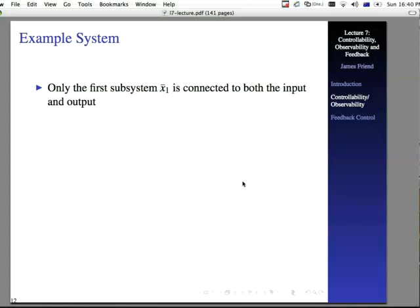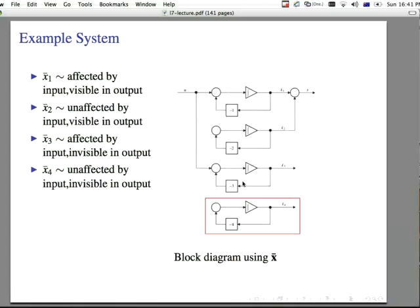Only the first system, x1 bar, is connected to both the input and output. It's the only contribution for the transfer function, which we noticed before, that's 1 over s plus 1. So, we have this root at minus 1, or the pole at minus 1 that shows up. All the other poles are allowed, and it's the only one that happens to actually make any sense in the example system.